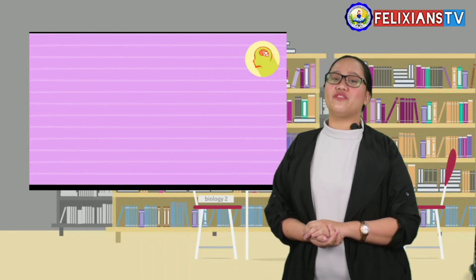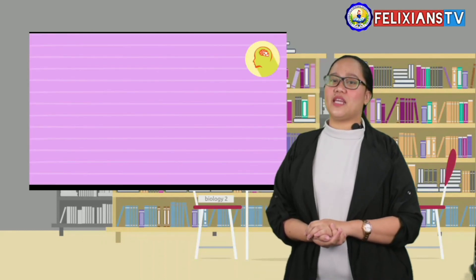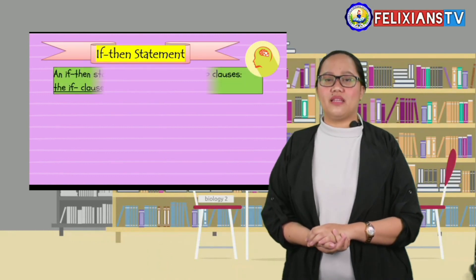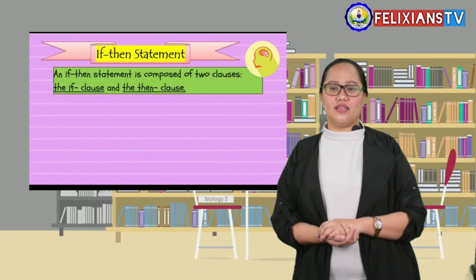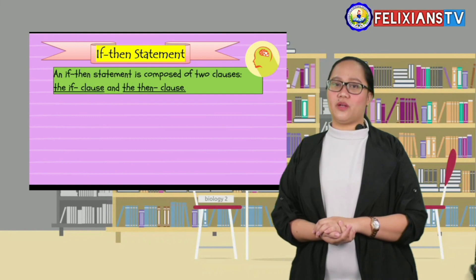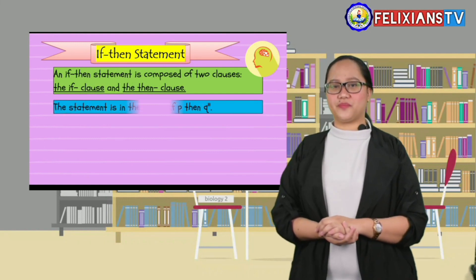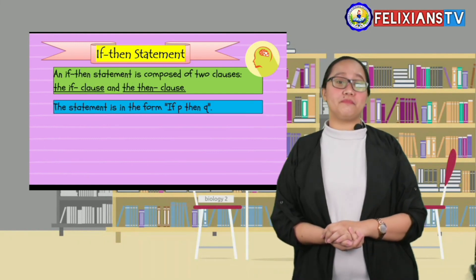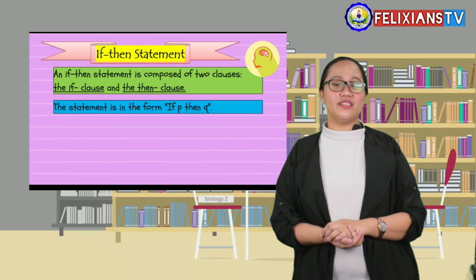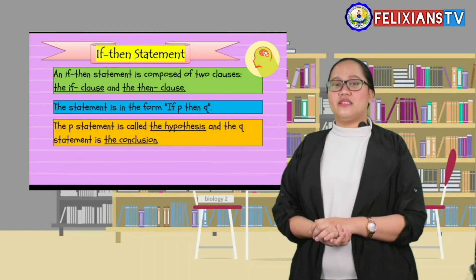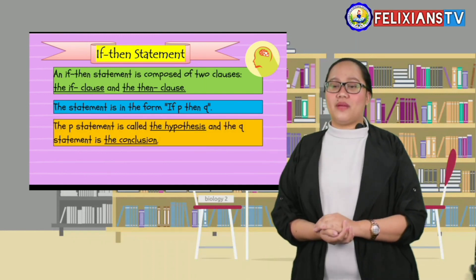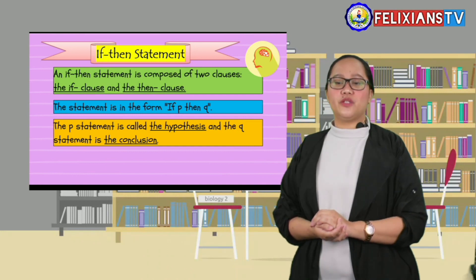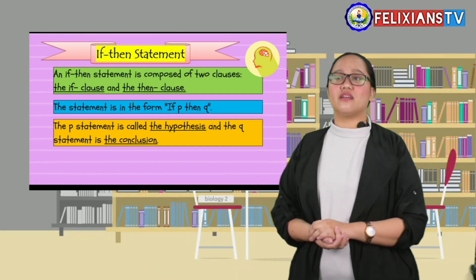So what is an if-then statement in mathematics? The if-then statement is composed of two clauses: the if clause and the then clause. The statement is in the form if p, then q. The p-statement is what we call the hypothesis, and the q-statement is what we call the conclusion.